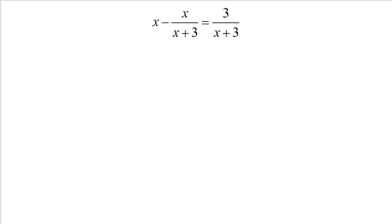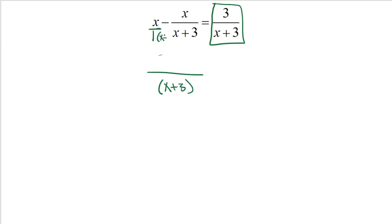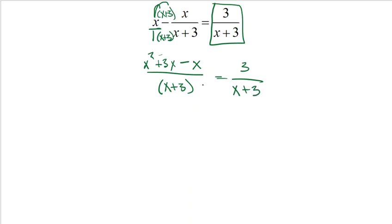Here's another example. I'm going to apply the same strategy. The right-hand side is one single fraction. On the left-hand side, I have x over 1 and x over x plus 3, so I need a common denominator. Multiplying the two denominators together gives x plus 3. I multiply x by x plus 3 on top and bottom, which generates x squared plus 3x, then minus the x. The right-hand side is 3 over x plus 3.